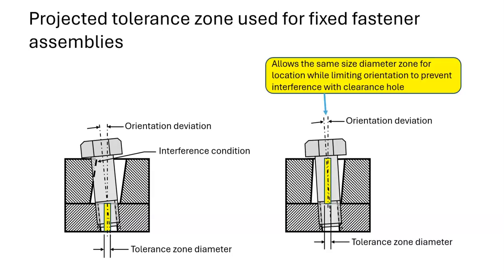Projecting the tolerance zone outside of the part will control the bolt shank's location and orientation such that the top of the bolt will not interfere with the top of the clearance hole.